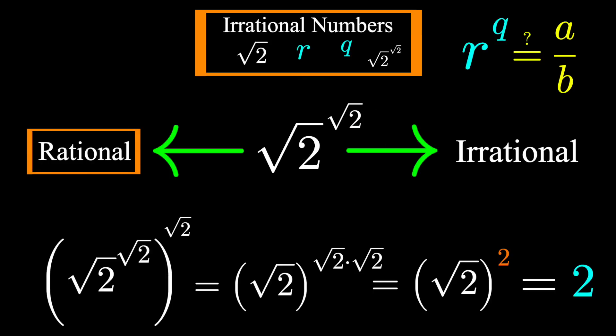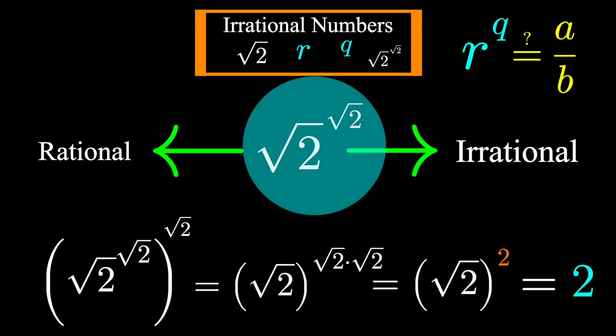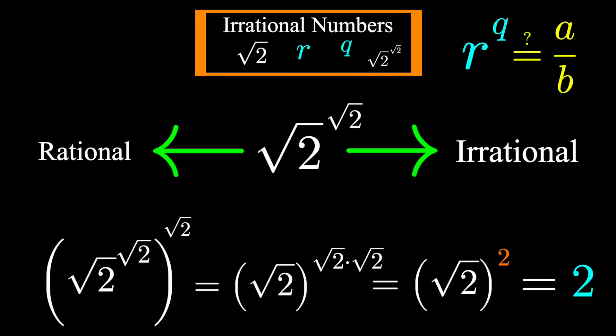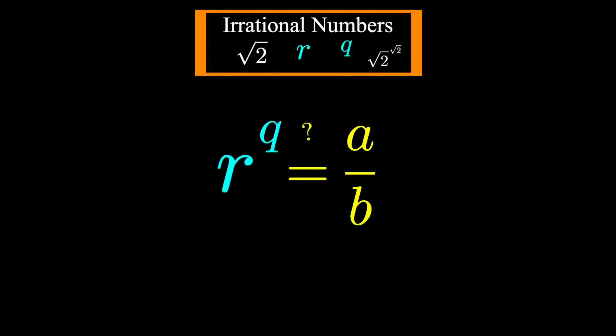So without actually knowing the value of this wild number, either it's rational, and we win, or raising it to the power of square root of 2 makes it rational, and we win. One way or another, we've answered our question that an irrational number raised to the power of another can be rational.